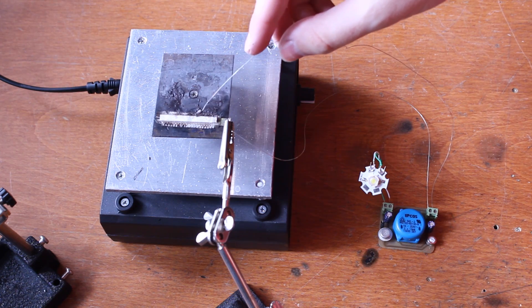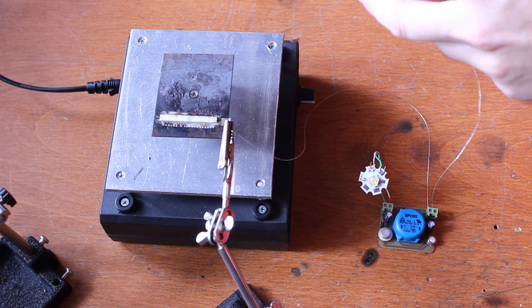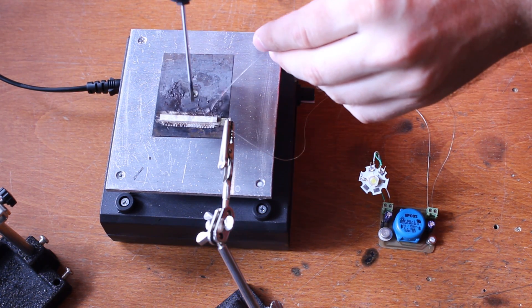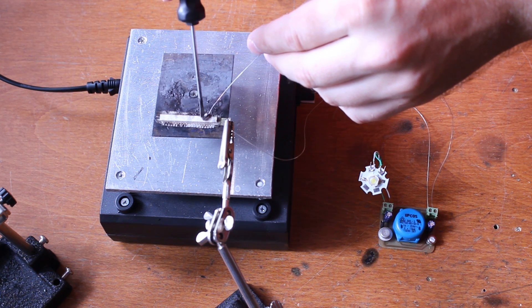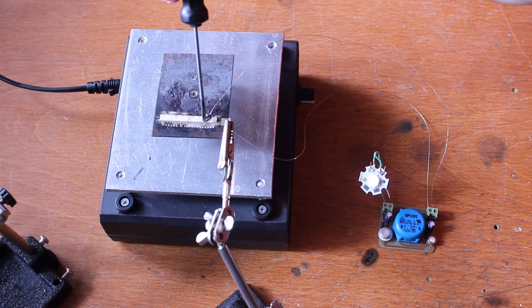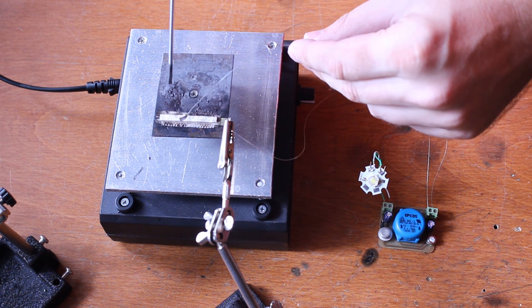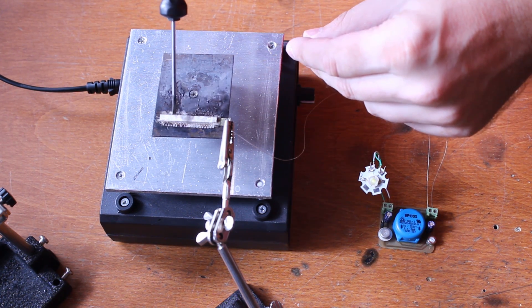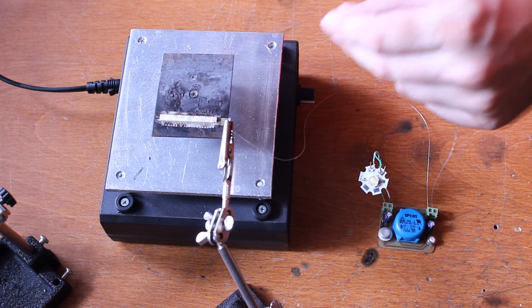How about powering something a little bit larger, like this 3W white LED? It lights up without a problem, but it's kind of dim. It's probably not the battery's fault, but rather the joule thief can't provide enough current.